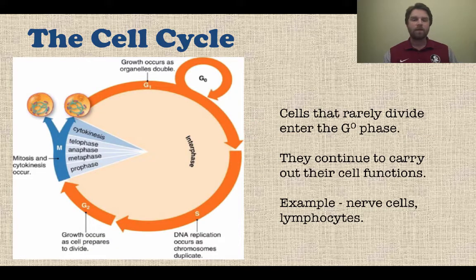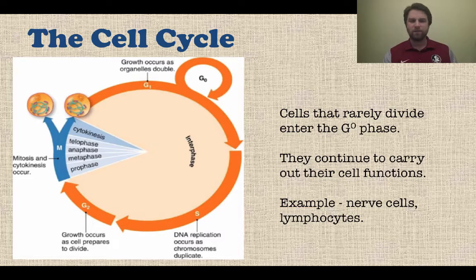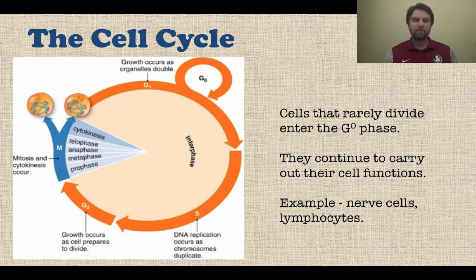There is also a G0, or G naught phase. Cells that don't divide very much can enter a rest phase called the G zero phase, and that is just kind of an offshoot of the G1 that you can see. They continue to carry out their normal functions. Examples of cells in G zero include nerve cells and lymphocytes — these are ones that don't divide very often.